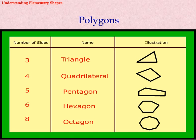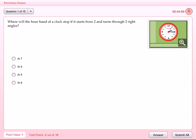Polygons — classified by number of sides: Three sides: Triangle. Four sides: Quadrilateral. Five sides: Pentagon. Six sides: Hexagon.